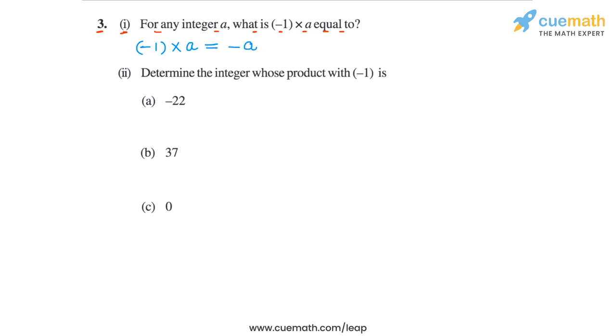Then in part 2, the statement is: determine the integer whose product with -1 is equal to -22, 37, and 0. So for -22, we write this statement: (-1) × ___ = -22. And now we have to determine the correct integer for this blank.